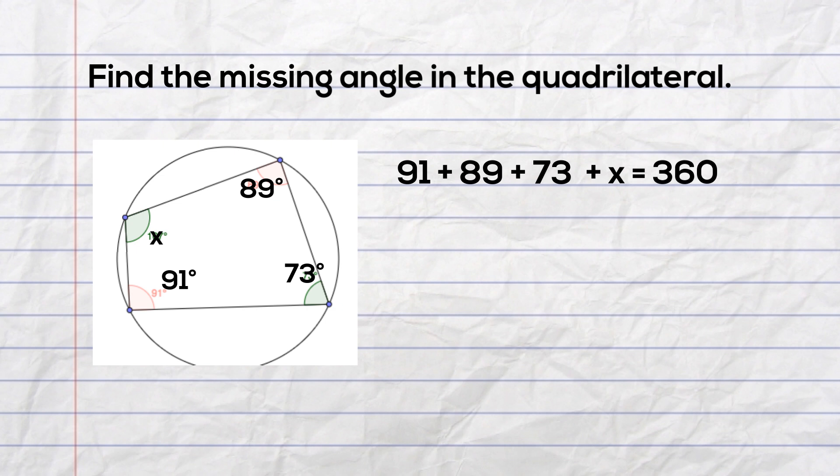Let's solve another one. Find the missing angle in this quadrilateral. We have three angles: 91, 89, and 73 degrees. We will plug them into the fact that we know all four angles add to 360 degrees.